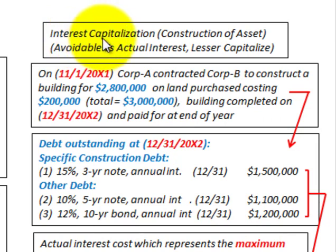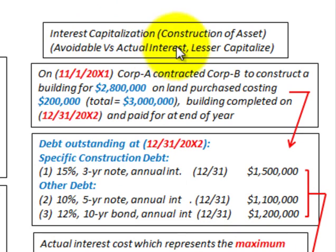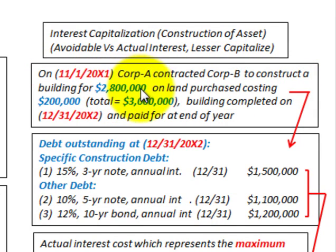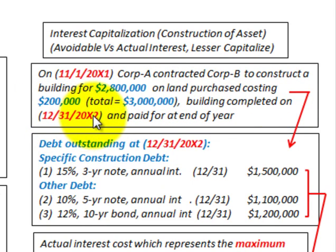We're going to go through a basic example of how to determine interest capitalization on construction of an asset. We're constructing a building, and we have to determine the avoidable interest versus the actual interest on this project — the lesser amount will be capitalized. On 11-1-20X2, Corporation A contracted to construct a building for $2.8 million on land costing $200,000, making the total project cost $3 million. The building is to be completed on 12-31-20X2 and paid for entirely at the end of the year.